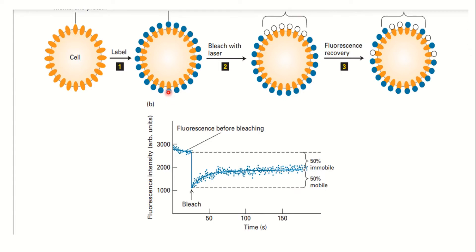We can understand this from the graph. When we had fluorescently tagged the membrane protein or lipid, the fluorescent signal was at a high level. As we bleached, the fluorescence dropped sharply to the lowest point. But after some time, we found fluorescence recovery. For example, 50% of the protein recovered fluorescence — this recovered fraction is the mobile fraction, and the remaining non-recovered portion is the immobile fraction.